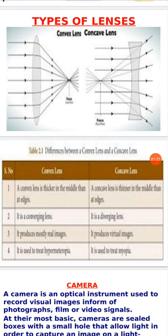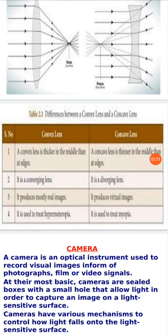The second distinction is that a convex lens is a converging lens — it converges the rays of light — while a concave lens is a diverging lens that diverges rays of light. Third, a convex lens produces mostly real images, while a concave lens produces virtual images in most cases. Finally, the convex lens is used to treat hypermetropia, while the concave lens is used to treat myopia — sight defects that will be covered in a later lesson.